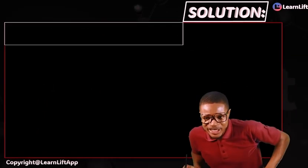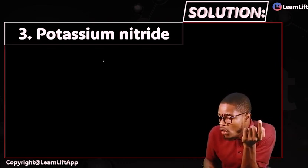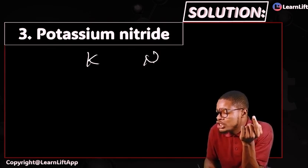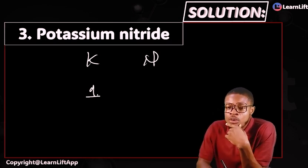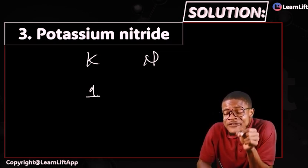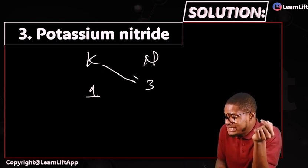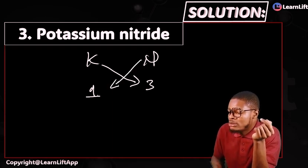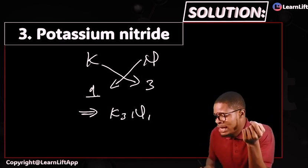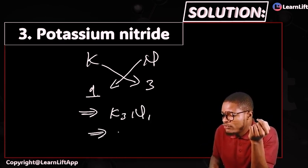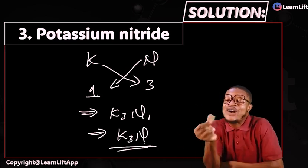Number three: potassium nitride. Elements are potassium and nitrogen. Potassium is in group one — valency is one. Nitrogen is in group five — valency is three. Interchange: potassium gets valency three, nitrogen gets valency one, giving K3N1. Remove the subscript one — the formula is K3N. That is your potassium nitride.